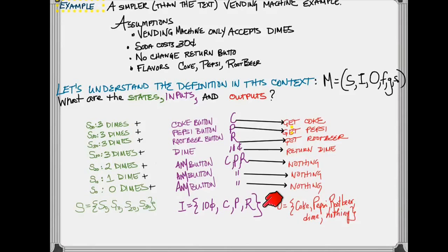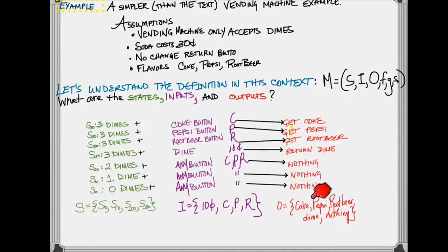So our inputs, there are four inputs: adding 10 cents, pressing the Coke button, pressing the Pepsi button, pressing the root beer button. And our outputs are going to be receiving a Coke, receiving a Pepsi, receiving a root beer, returning an extra dime, or returning nothing.